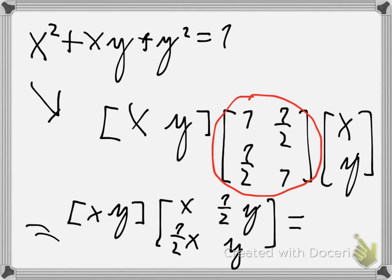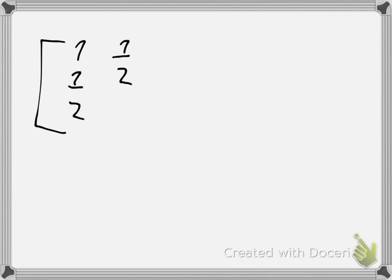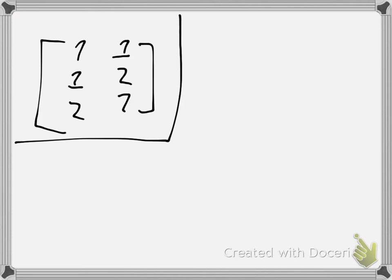The coefficients before x squared and y squared are basically the first row, first column entry and the last row, last column entry. And these off-diagonal elements — you take half of the coefficients before the xy term. Half of 1 is 1 over 2. So this is our matrix. To find the axis, we will find the eigenvalues and eigenvectors of this matrix.